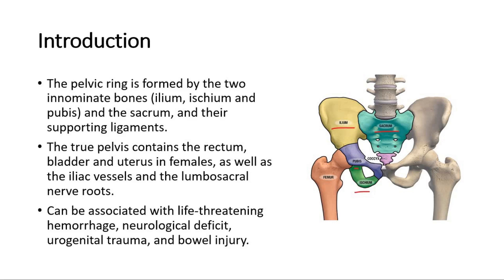The true pelvis contains the rectum, bladder, and uterus in females, as well as the iliac vessels and the lumbosacral nerve roots.